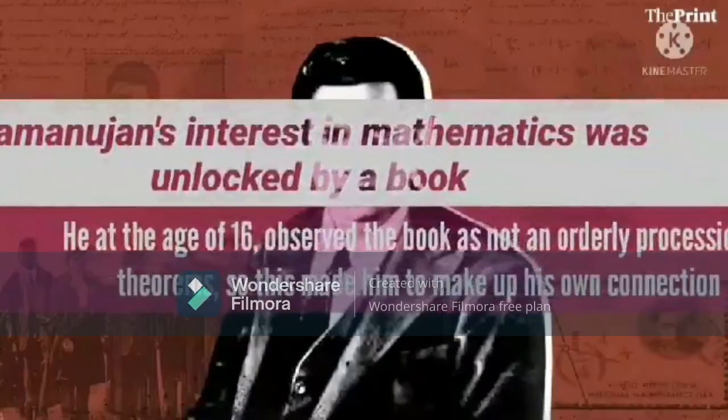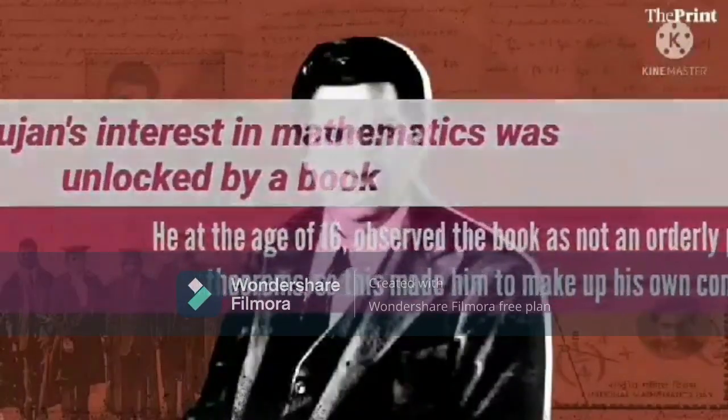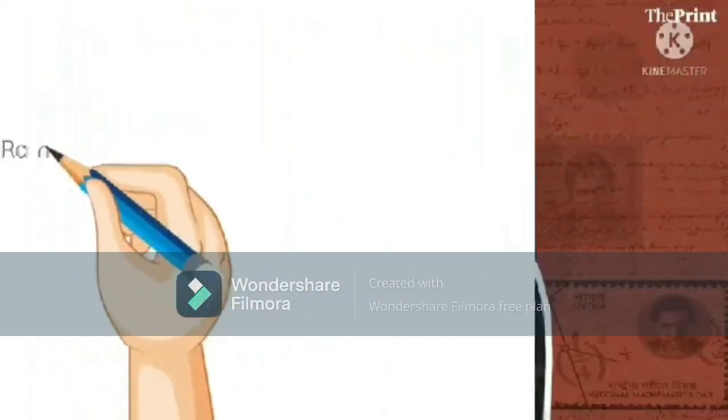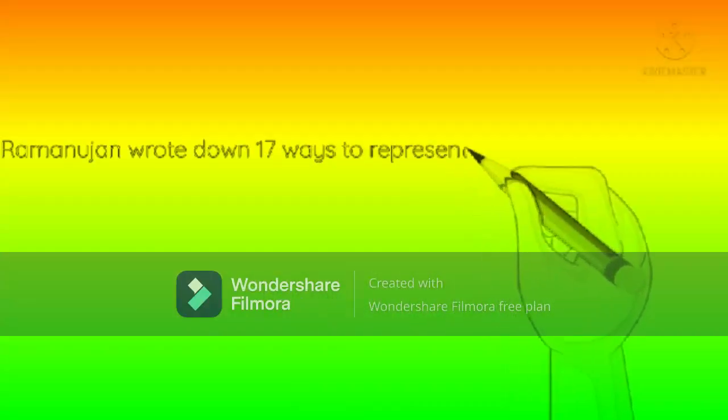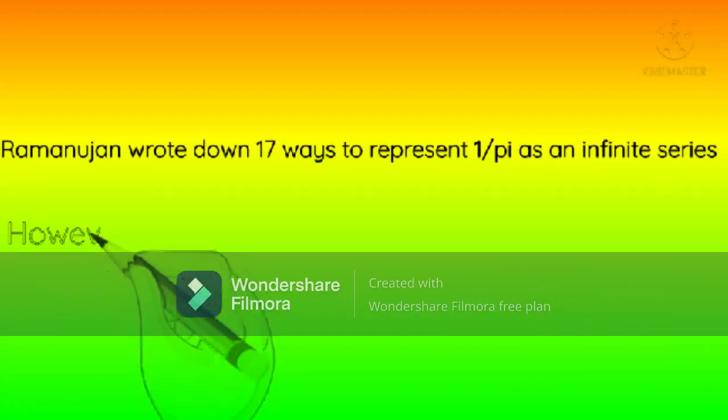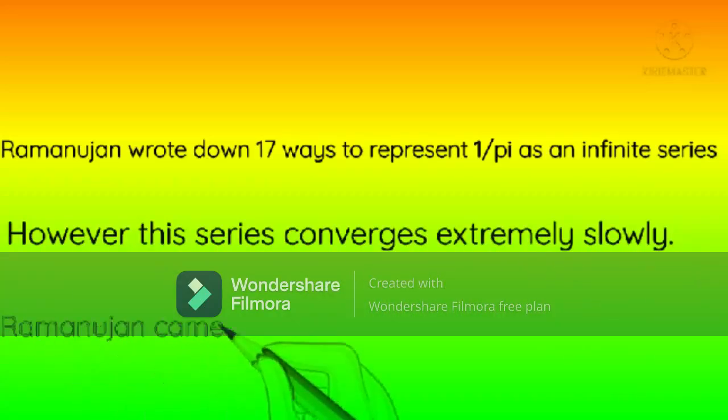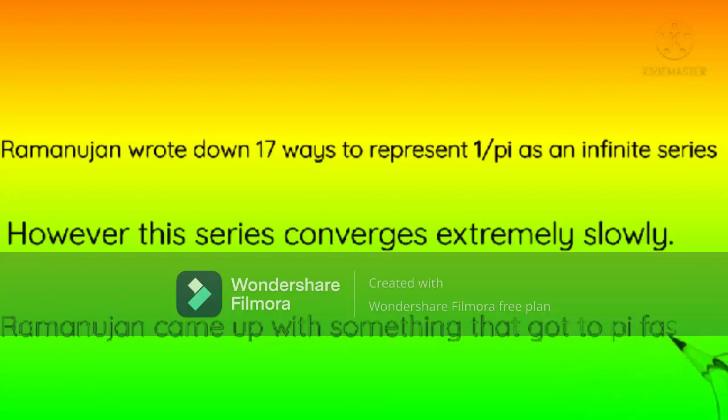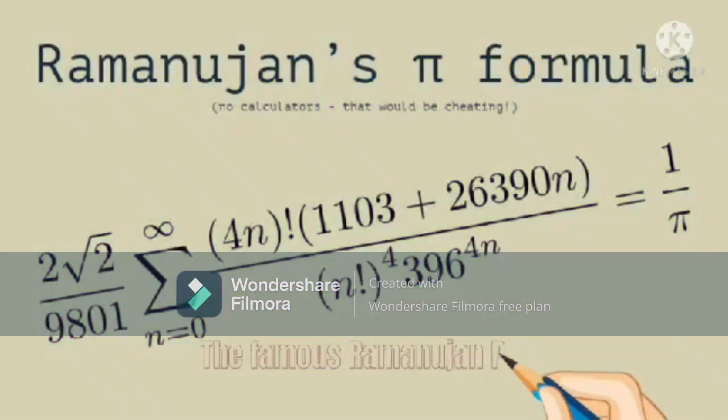Ramanujan's Pi formula: at first he wrote down 17 ways to find Pi. But this was a very large series. So, he discovered a new series which could find Pi much more easily. This series gets you to the value of Pi after the first term and adds 8 correct digits per term.